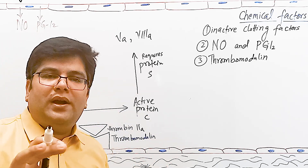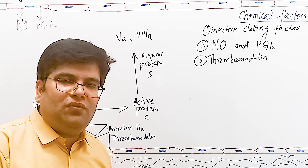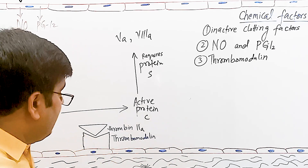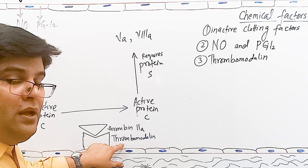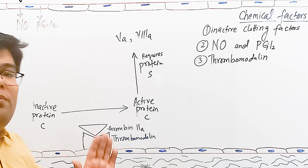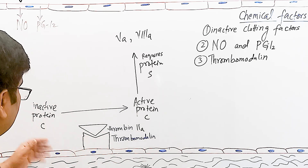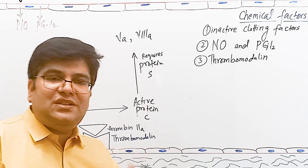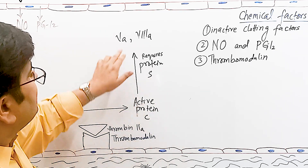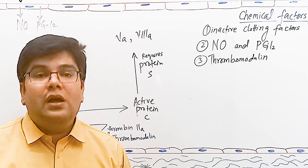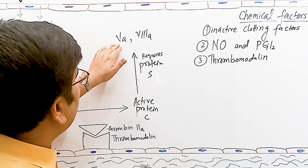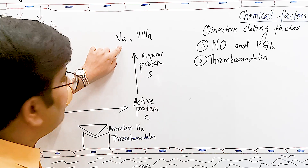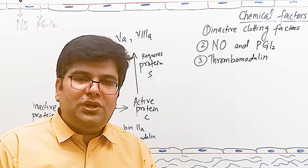Active protein C, in the presence of protein S (which acts as a cofactor), inactivates already-active clotting factor number 5 and already-active clotting factor number 8. This inactivation is done by proteolysis of factor 5 and factor 8 by protein C. In this way, thrombomodulin contributes to anticoagulation by both removing thrombin and activating the protein C pathway.